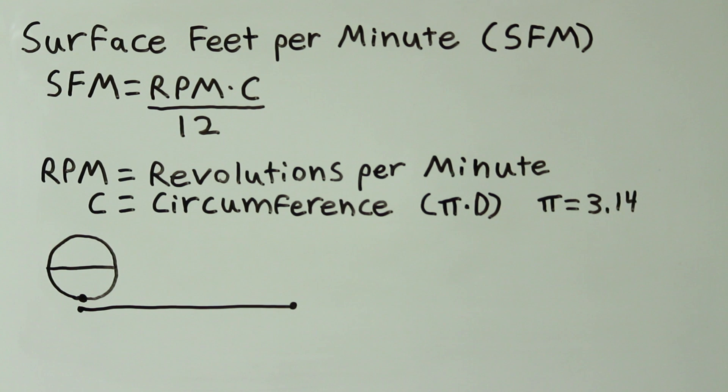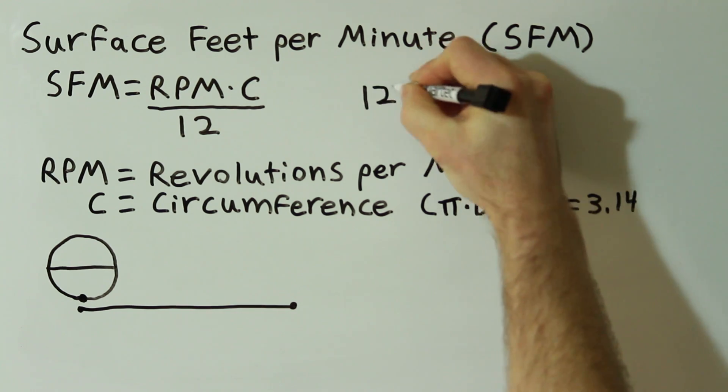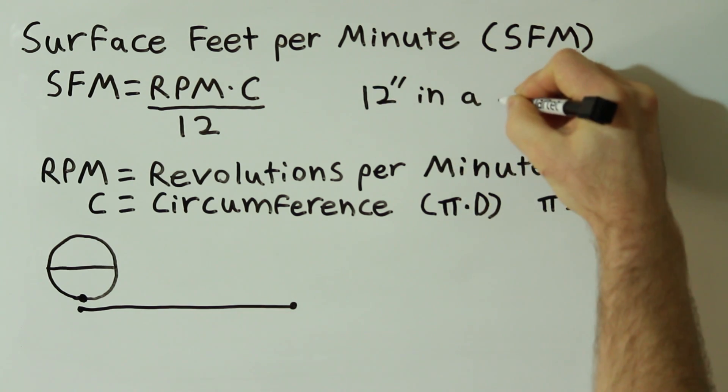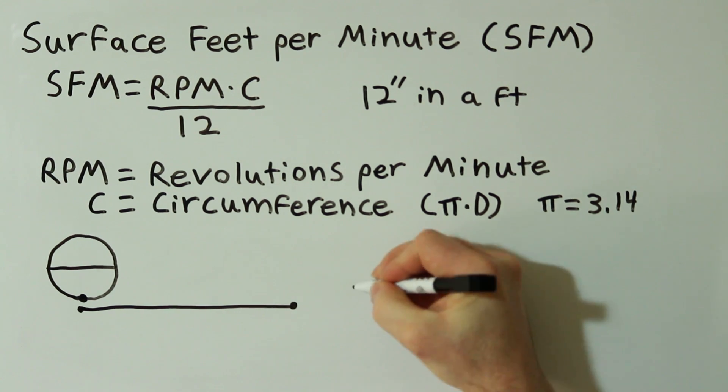Since the diameter of the material being cut in a lathe and the diameter of the tools used in a mill are measured in inches, then the RPM times circumference will equal the surface inches per minute. Since there are 12 inches in a foot, we divide RPM times circumference by 12 to get the surface feet per minute.